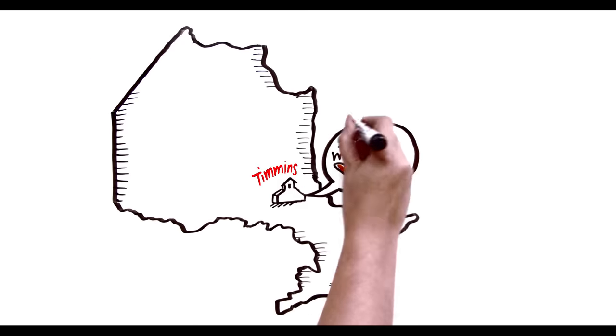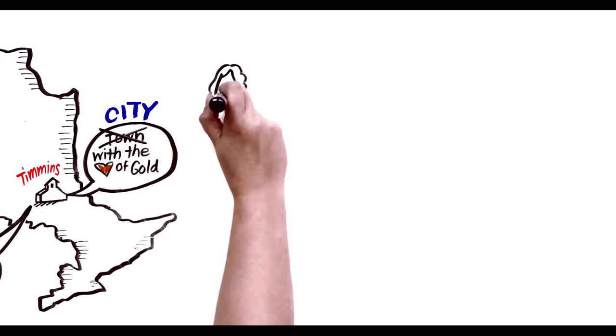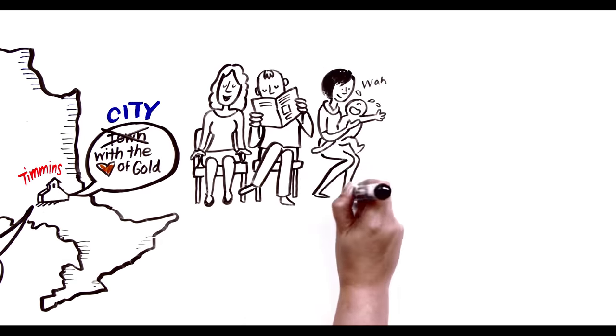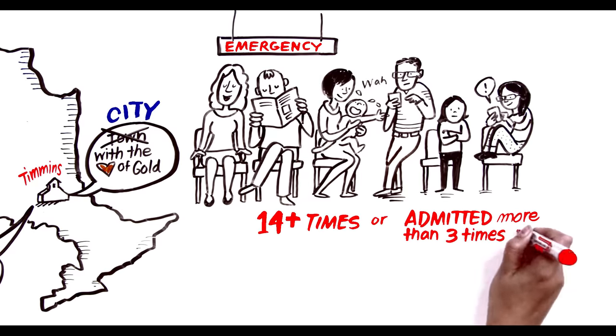These shifting sands that transition from silo care are the reality of the emerging science of complex care. Sure, asking what's the matter, but also asking what matters to you. A great example is in Timmins, a small town in rural Ontario, where they wondered if they could do a better job of handling complex patients in the emergency department. So people seen in the emergency more than 14 times or admitted more than three times a year.